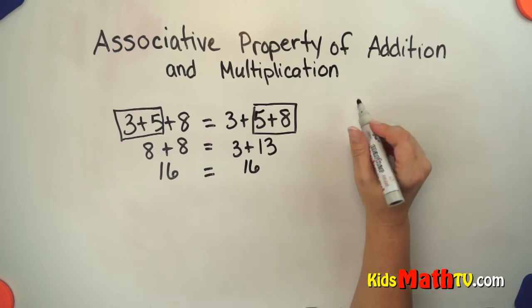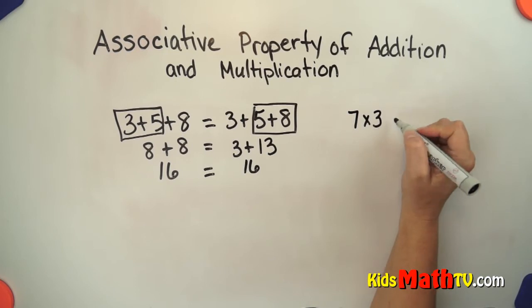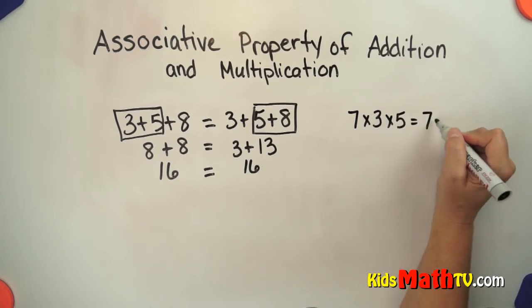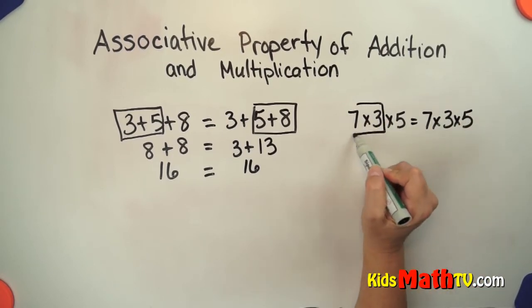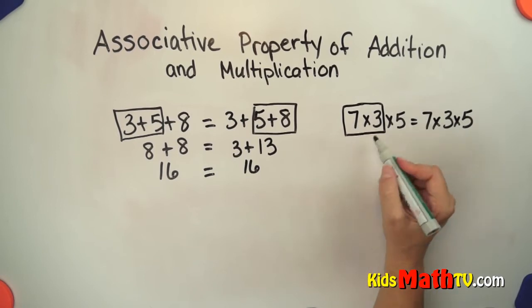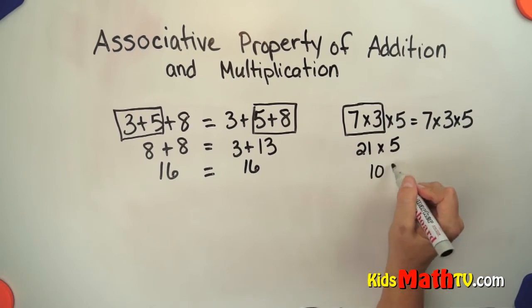It's the same way with multiplication. We have 7 times 3 times 5. We can group that two different ways. We can group this first. 7 times 3 is 21 and then multiply it by 5 and when you do that you get 105.